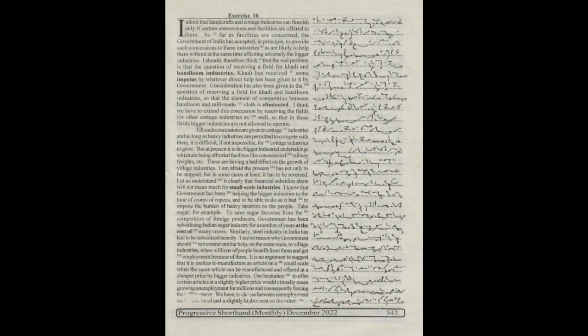I know that government has been helping the bigger industries to the tune of crores of rupees and to be able to do so, it had to impose the burden of heavy taxation on the people. Take sugar for example - to save sugar factories from the competition of foreign producers, government has been subsidizing Indian sugar industry for a number of years at the cost of many crores.